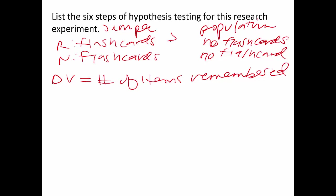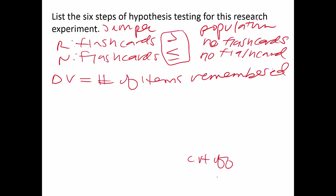From the original problem, I said I thought flashcards would do better, asking whether we can increase the number of items. That means the null hypothesis must be less than or equal to — and your direction here will affect step four. We're setting up a positive one-tailed test because I only care if the result is greater than; if it's less than, I'd fail to reject anyway.